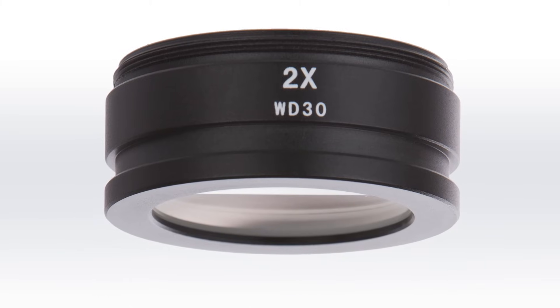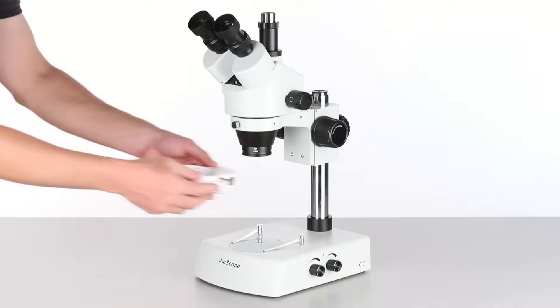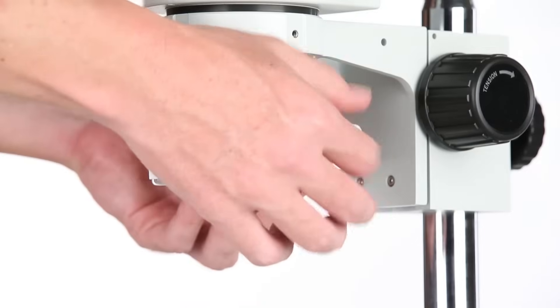The 2x Barlow lens has a mounting groove, which allows the ring light to be mounted directly.